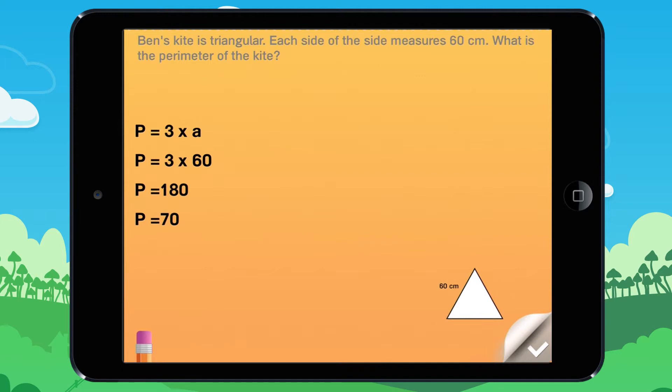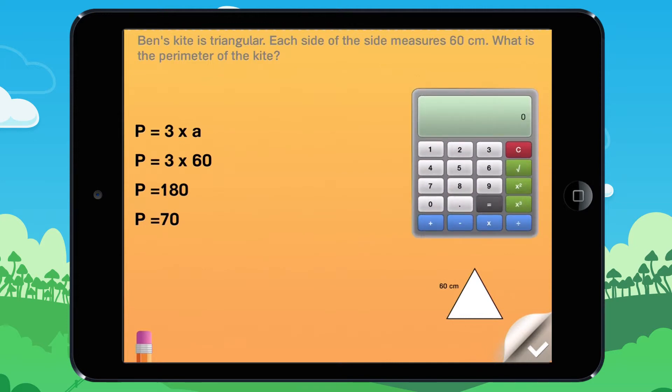P equals 3 times 60. Calculate 3 times 60.